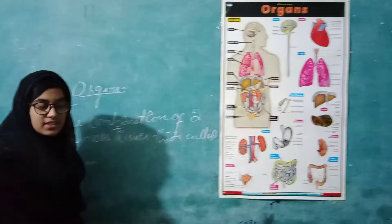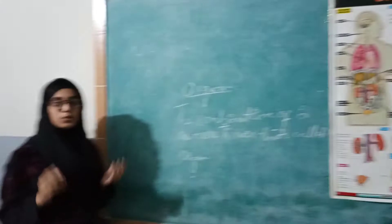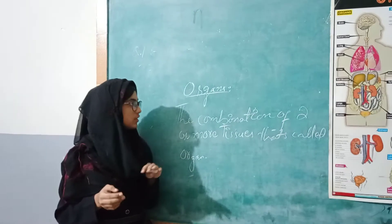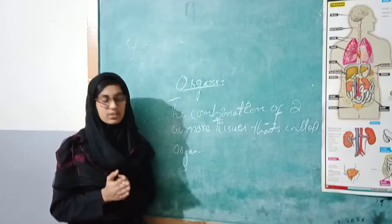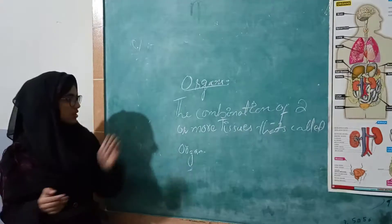The definition of organs: when two or more tissues join or contact, they form organs.